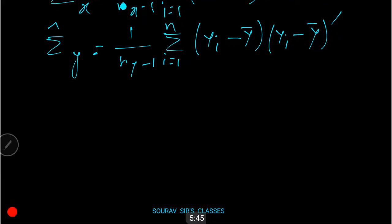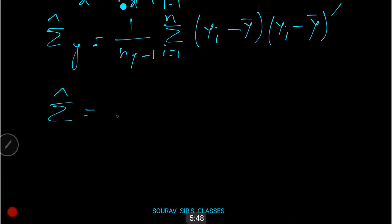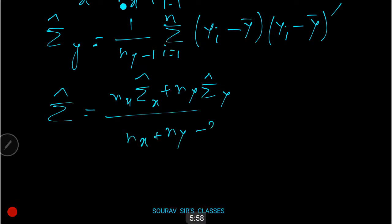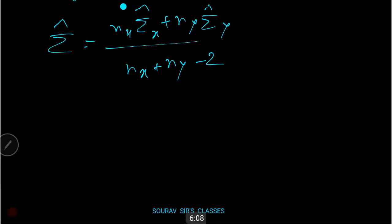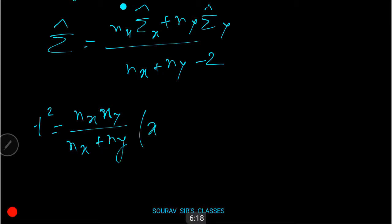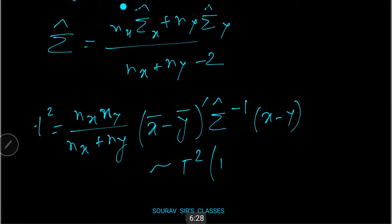The unbiased pooled covariance matrix estimate is Σ̂ = (n_x Σ̂_x + n_y Σ̂_y) / (n_x + n_y − 2). Finally, Hotelling's two-sample T-squared statistic is T² = (n_x n_y)/(n_x + n_y) · (x̄ − ȳ)ᵀ Σ̂⁻¹ (x̄ − ȳ), which follows a T²(p, n_x + n_y − 2) distribution.